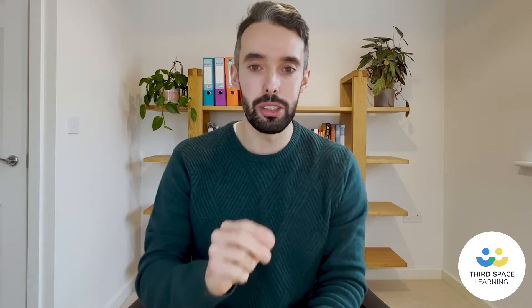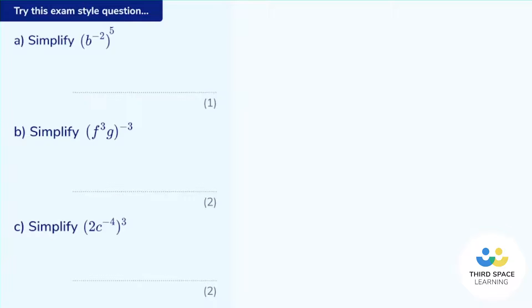Let's see how we can apply this to an exam-style question. Part A says: simplify b to the power of negative two, all to the power of five. The laws of indices tell me I can just multiply those powers together. So it's negative two multiplied by five — negative two multiplied by five is negative ten. So this is b to the power of negative ten.